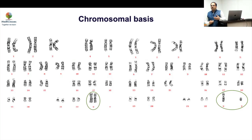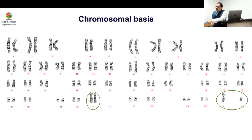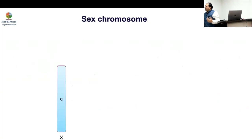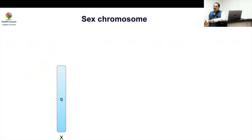How do you balance out the double dose of genes? We know how a single gene can cause a huge problem, so with so much more genetic material, what happens becomes important. There is a discrepancy — double doses of genes — and therefore there is a need to balance. This balancing process is known as lyonization.